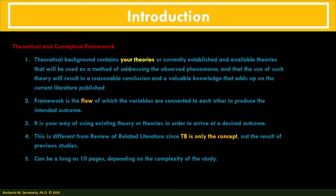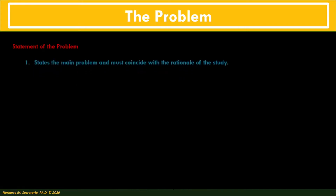A theoretical background can be as long as 10 pages, depending on the complexity of the study. The statement of the problem displays the main problem of the study. The main problem must coincide with the rationale of the study — the rationale explains the urgency of the research and provides the reader the idea of what the problem or the gap of knowledge is. The statement of the problem will be in question form, as it is equivalent to a research question in modern article-based research.